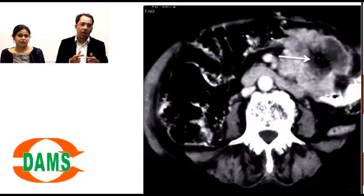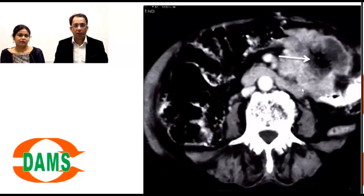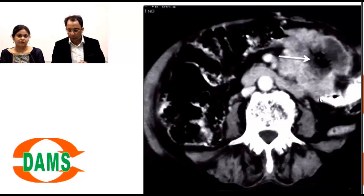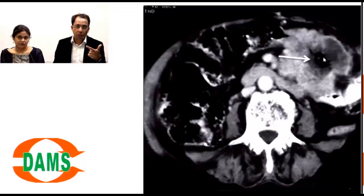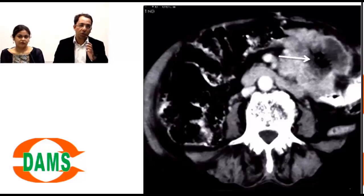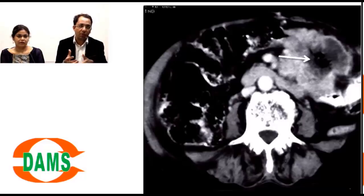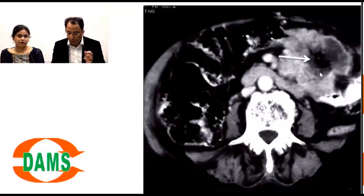Looking at this CT abdomen, you can see a jejunal loop with oral contrast identifying the bowel. There is an exophytic, heterogeneous mass with peripheral enhancement. These tumors show peripheral enhancement because when they grow larger, the central part outgrows its blood supply and becomes necrotic, producing a low-density central area — very typical of GIST. A size greater than 5 cm is a poor prognostic sign radiologically.